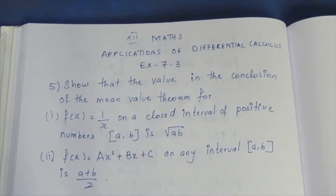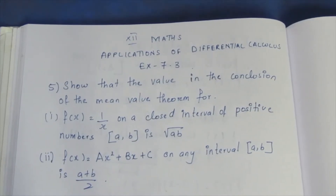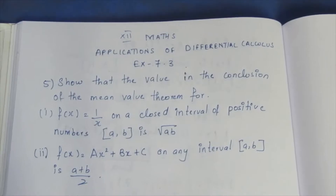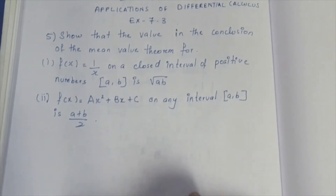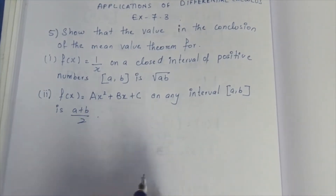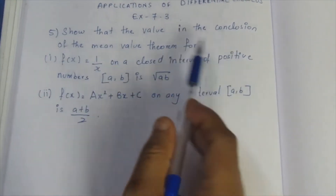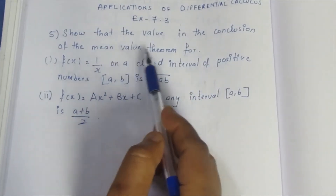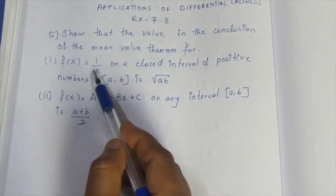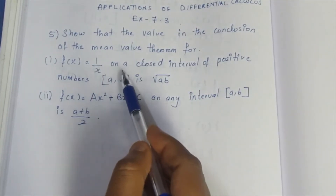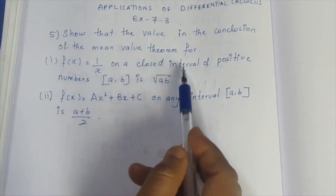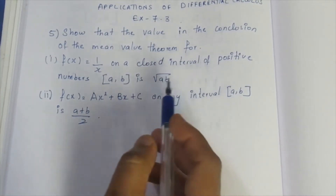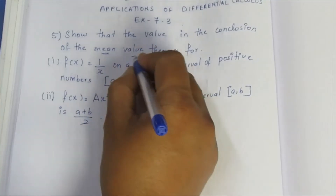Hello viewers, I am Aitli Iniki. 12th math applications of differential calculus, exercise 7.3, 5th sum. We need to show that the value in the conclusion of the Mean Value Theorem for f(x) = 1/x on a closed interval of positive numbers. We will use the Mean Value Theorem to solve this.